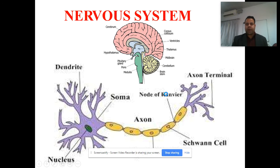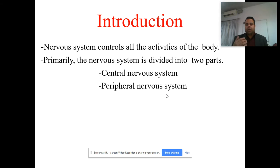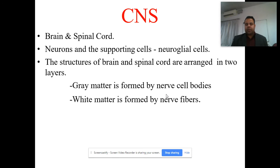The nervous system is primarily divided into two parts: the central nervous system and the peripheral nervous system. The central nervous system comprises the brain and spinal cord, neurons, supporting cells, and neuroglial cells. The structures of the brain and spinal cord are arranged into two layers — gray matter, which is formed by nerve cell bodies, while white matter is formed by nerve fibers.